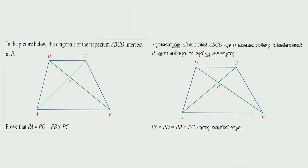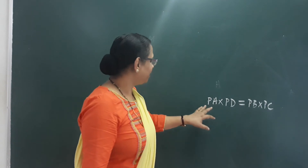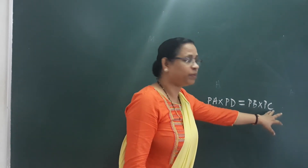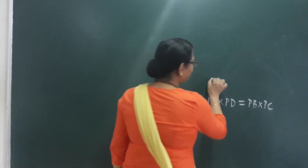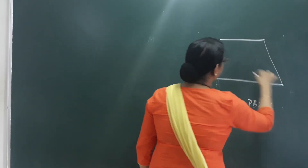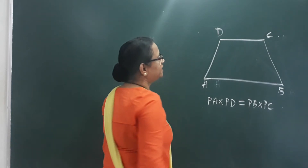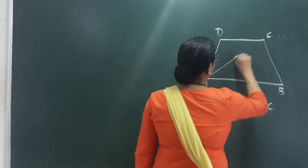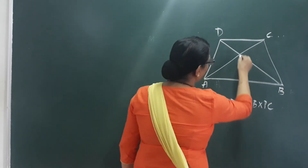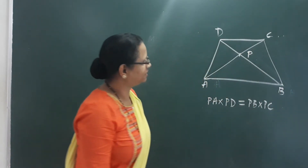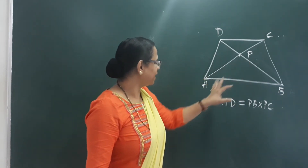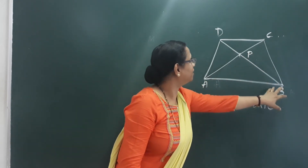Last question: In the picture below, the diagonals of the trapezium ABCD intersect at P. Prove that PA into PD is equal to PB into PC.